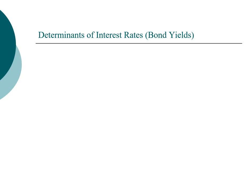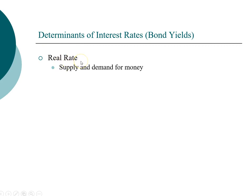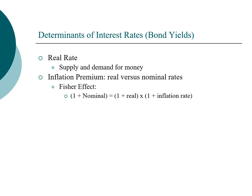All these characteristics together help determine the interest rate a company has to pay to borrow money. The first factor is the real rate, which depends on the supply and demand for money. TIPS is the closest approximation to the real rate, because it is guaranteed by the U.S. government — virtually default-risk-free and protected against inflation — so the yield to maturity on TIPS is typically very low. For all other investments not protected against inflation, an inflation premium must be added.